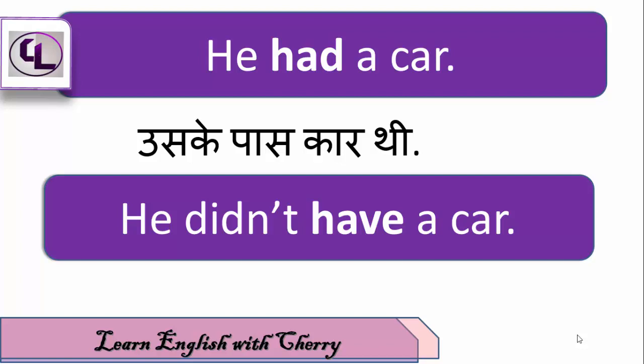यह simple past से related था। यहाँ had itself एक verb है। जब हम इसको negative में change करेंगे, तो had का first form है 'have,' तो यहाँ negative होगा: He didn't have a car. अगर had के साथ third form use नहीं हुई है verb की, तो यहाँ past perfect नहीं, simple past tense है। Simple past आप 'didn't' word से समझ गए होंगे।